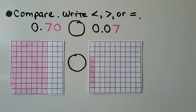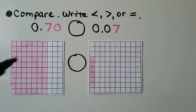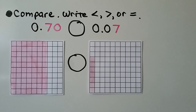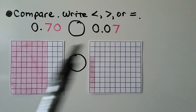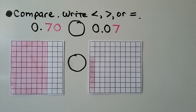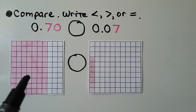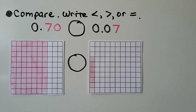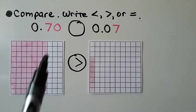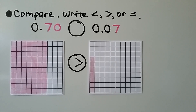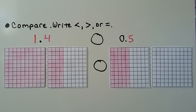We need to compare and write less than, greater than, or equal to. In this hundredths grid we have seventy hundredths; in this one we have seven hundredths. Looking at the grids, there are more shaded parts in the seventy-hundredths grid, so seventy hundredths is greater than seven hundredths.